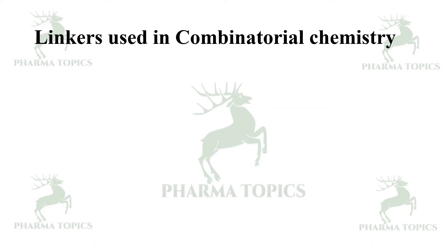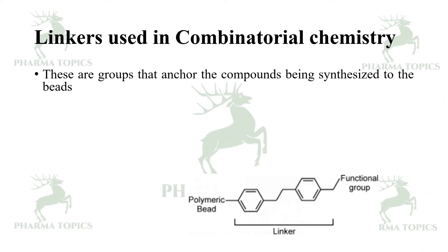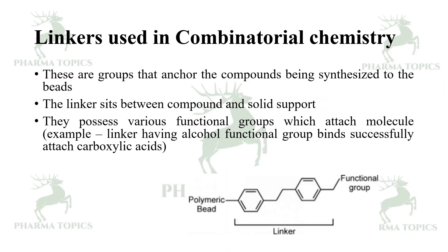The linkers used in combinatorial chemistry: in the link, there will be a polymeric bead, a functional group, and in between there will be a linker. These are the groups that anchor the compounds being synthesized to the beads. The linker sits in between the compound and the solid support. They possess various functional groups which attach the molecule — for example, a linker having an alcohol functional group binds and attaches carboxylic acid groups.